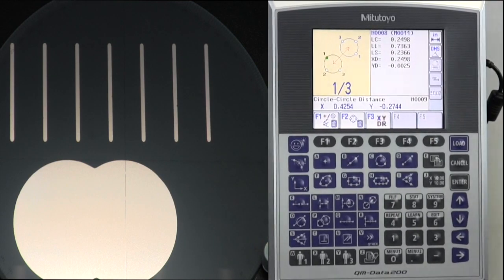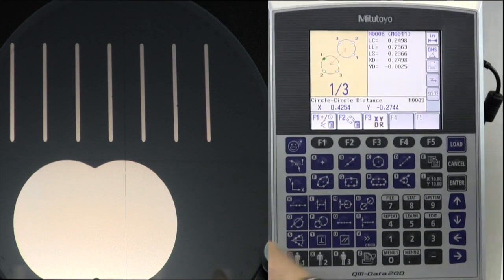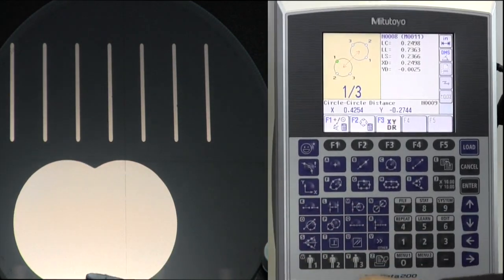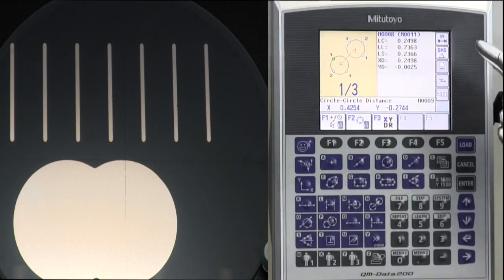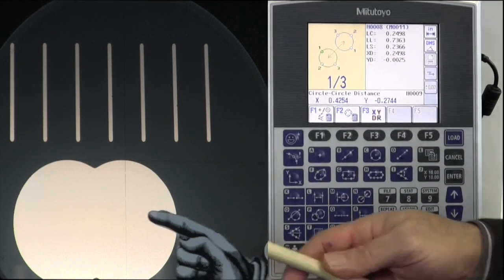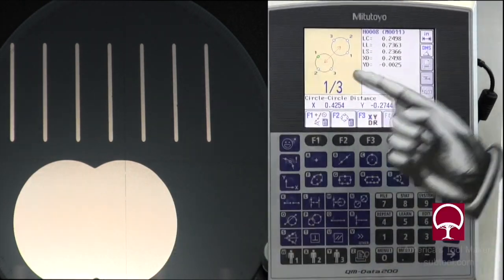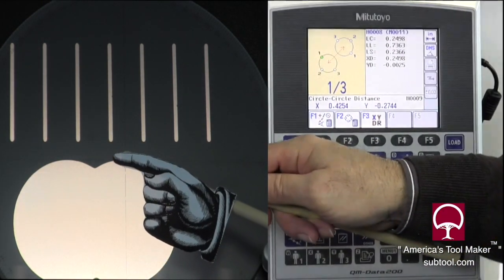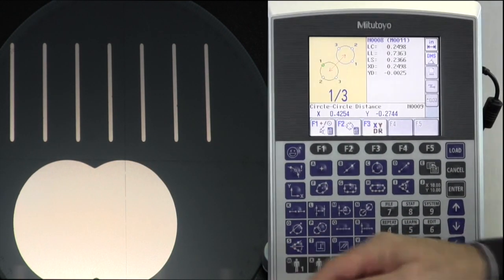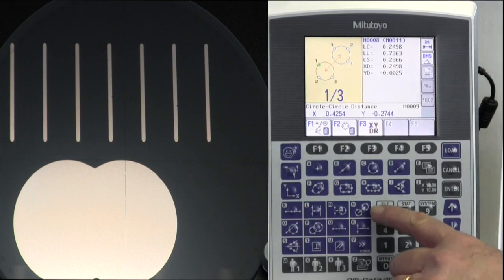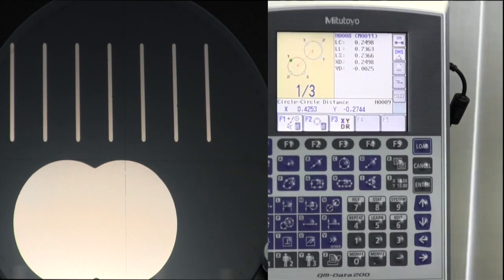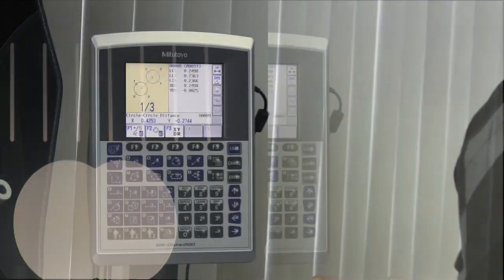LS is the shortest distance. If these circles were complete here, it's the distance across those two edges. LL is the distance from this outside edge to this outside edge. And LC is the distance from the furthermost point at the top and the furthest most point at the bottom. So one button. We picked six points. We got a slew of info. That's what I really like about this unit.